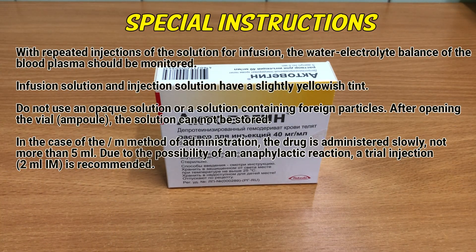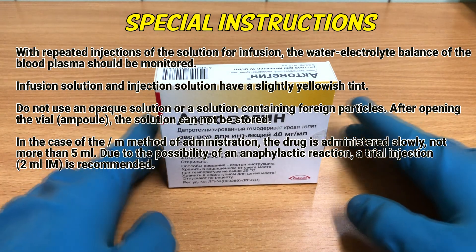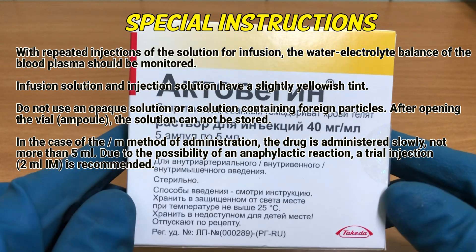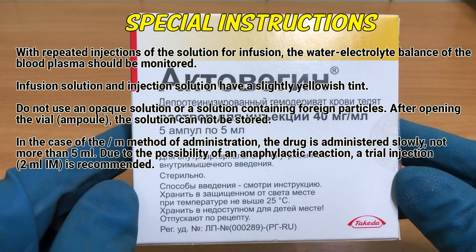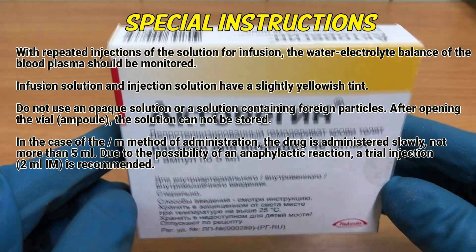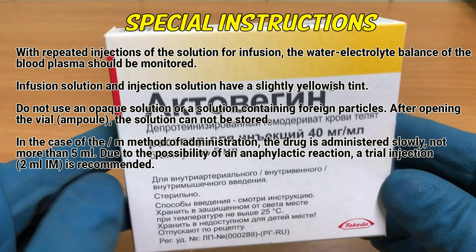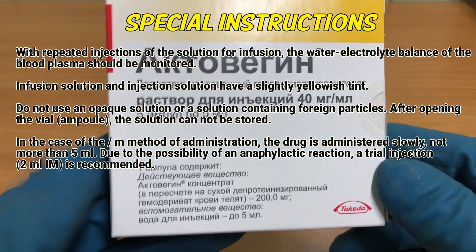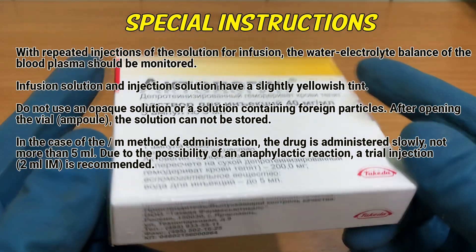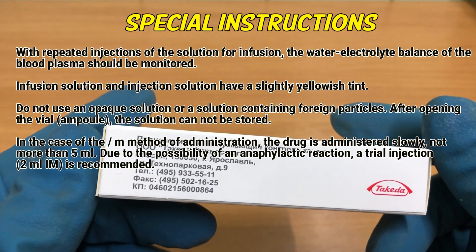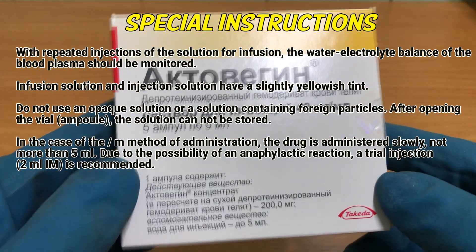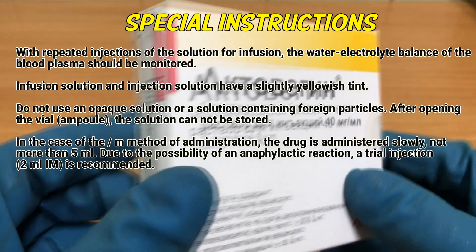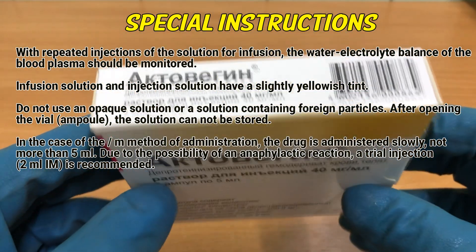Special instructions: With repeated injections of the infusion solution, the water-electrolyte balance of the blood plasma should be monitored. The infusion and injection solutions have a slightly yellowish tint; do not use an opaque solution or one containing foreign particles. After opening the vial or ampoule, the solution cannot be stored. For intramuscular administration, the drug is administered slowly, not more than 5 mL. Due to the possibility of an anaphylactic reaction, a trial injection of 2 mL IM is recommended.